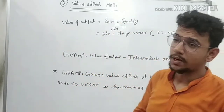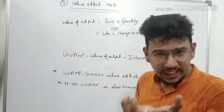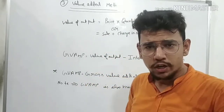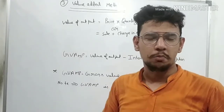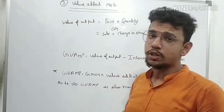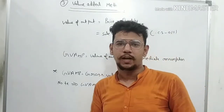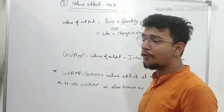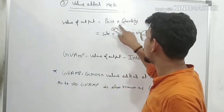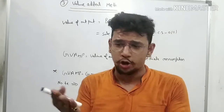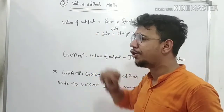Value-added method — the third method. You need to calculate the product value to find a country's national income. In the value-added method, you calculate the value of output. The formula for value of output is: price multiplied by quantity.